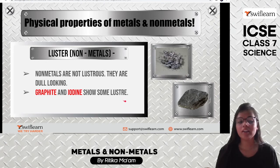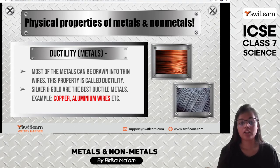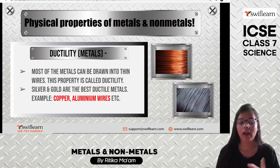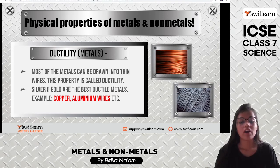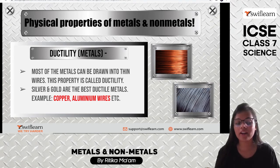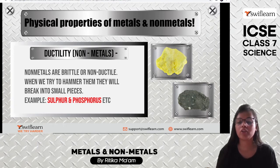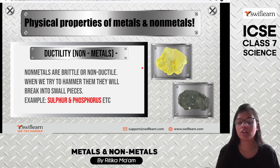Ductility is the ability to draw any substance into thin wire. Metals possess this property — we say metals are ductile. Silver and gold are the best ductile metals, and we also have wires made of copper and aluminium. Nonmetals are brittle and non-ductile — when hammered they break. Therefore, substances like sulfur and phosphorus cannot be converted into wires.